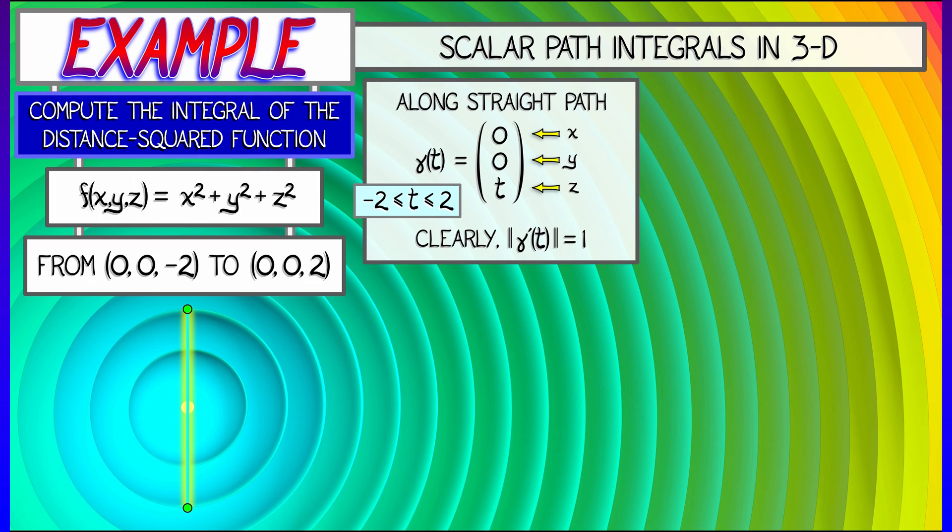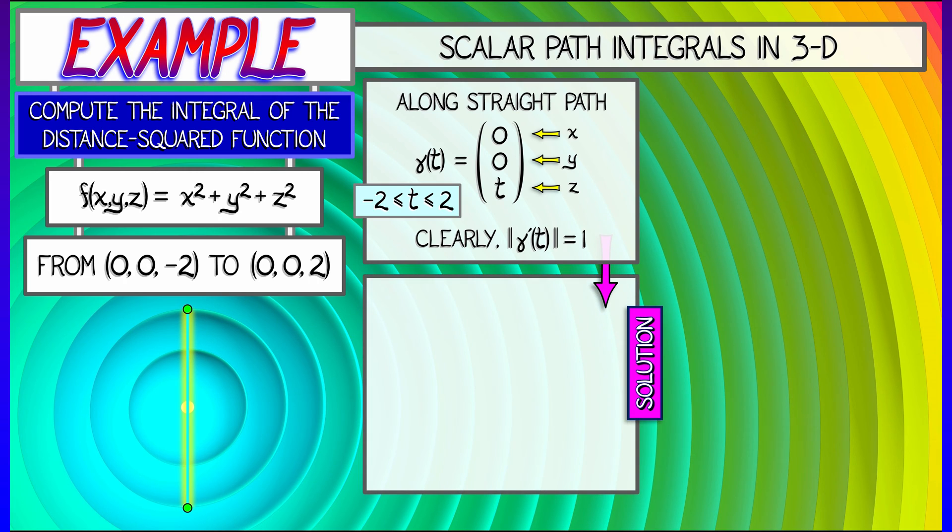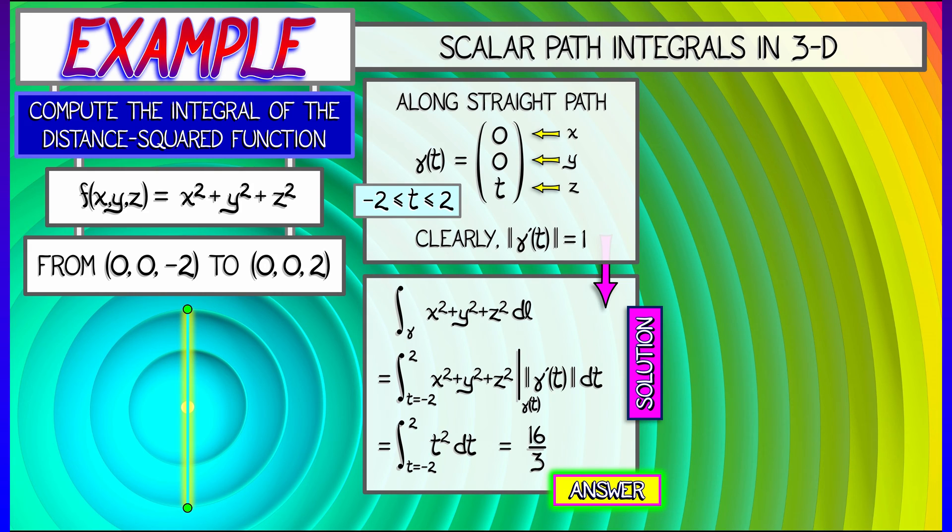Now this path is clearly a unit speed path, so the path integral is going to be very simple. To integrate x squared plus y squared plus z squared, we substitute in gamma of t for the x, y, and z coordinates, and then dl becomes the length of gamma prime of t dt. Now all of this is going to be really simple. Why? x is 0, y is 0, z is t, and gamma prime of t is of unit length, so we simply have to integrate t squared dt as t goes from -2 to 2, yielding a final answer of 16/3.